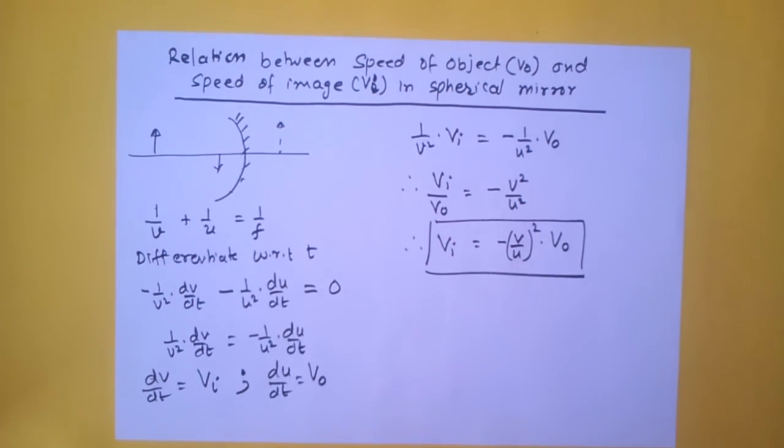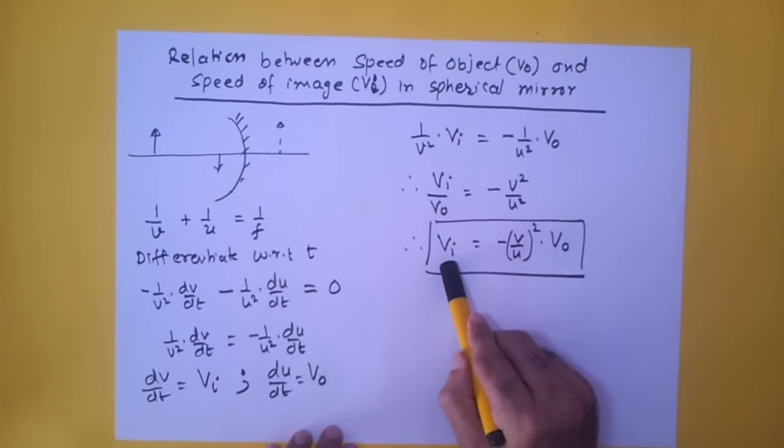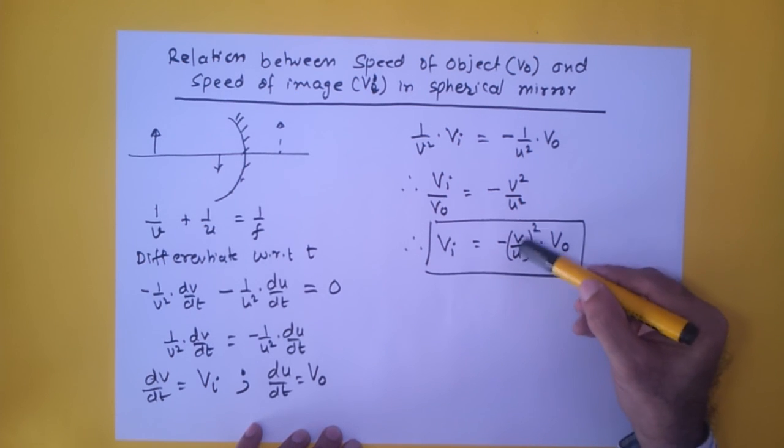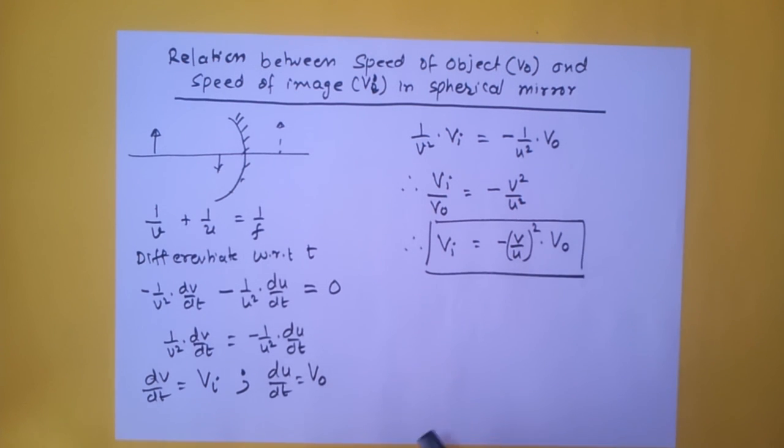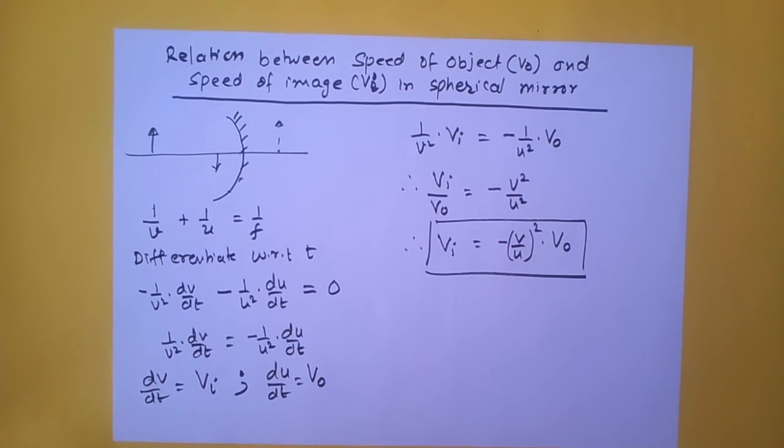So this is the relationship between the velocity of the image and the velocity of the object when the distances v and u are from the pole of the mirror. Thank you.